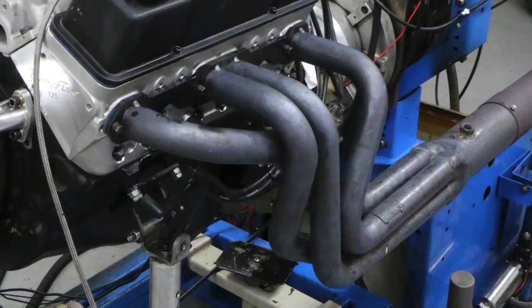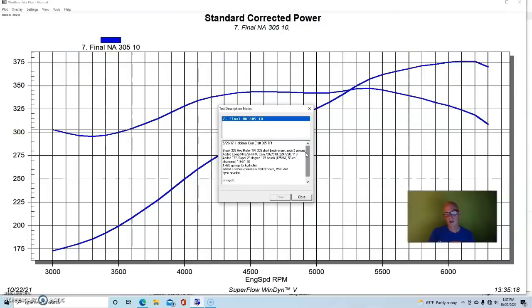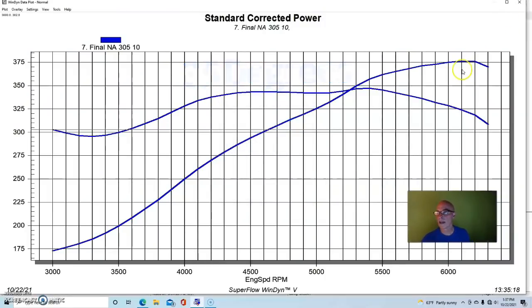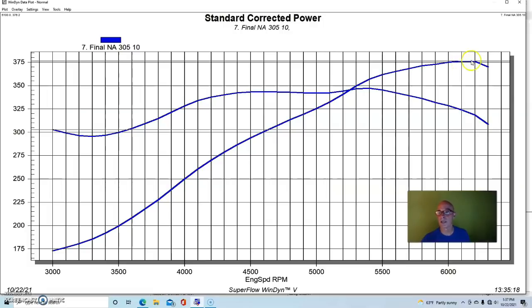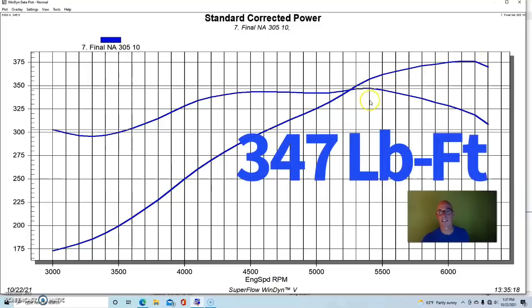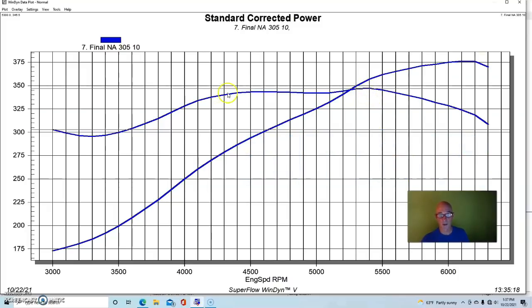We always run those on the dyno. When this thing was run naturally aspirated before the nitrous, it made best power at 35 degrees of total timing. Run in that manner, this combination produced 376 horsepower. Peak torque checked in at 347 foot-pounds.